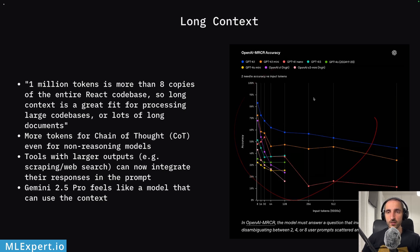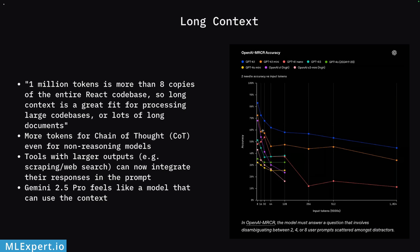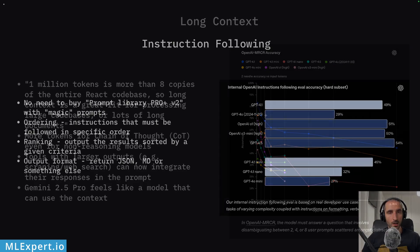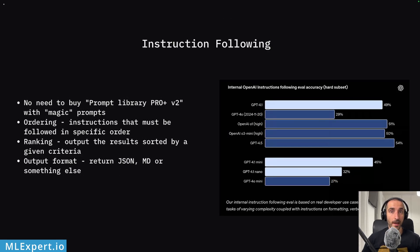OpenAI's benchmark chart shows accuracy up to one million tokens on the x-axis. There is a decrease in performance at larger contexts, but models like GPT-4.1 Mini and GPT-4.1 maintain pretty good accuracy even at very large context sizes. Unfortunately, they didn't compare their models to something like Gemini 2.5 Pro or Claude 3.7.